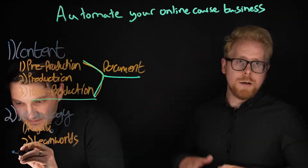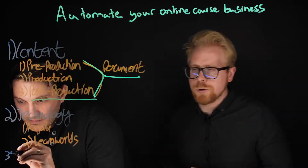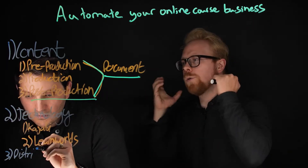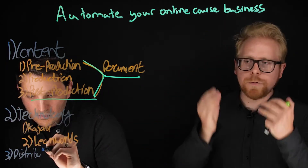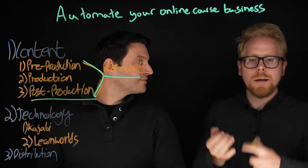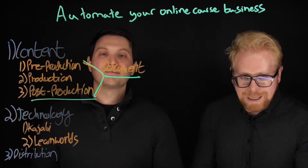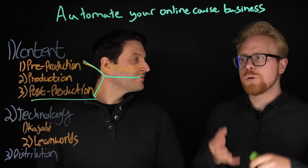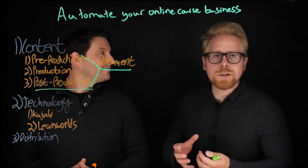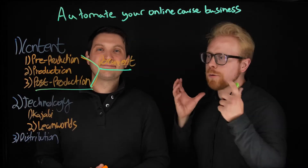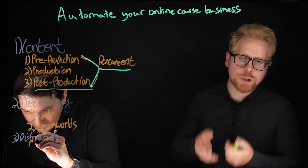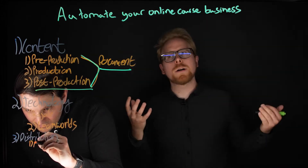Number three is distribution. Distribution is broken into four areas. When you work on these four areas, you will be able to automate the sale, distribution, and marketing of your course. The first thing you need to figure out when talking about distribution is your marketing channels.